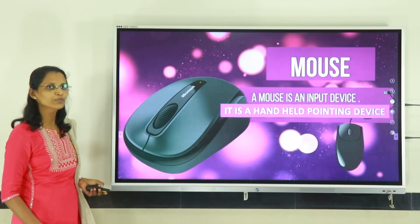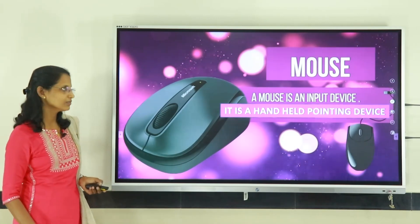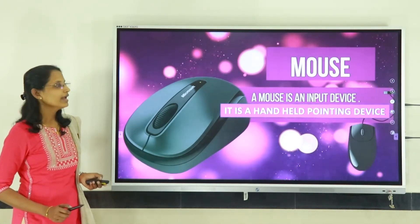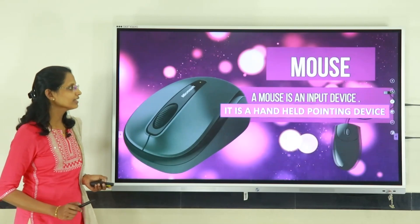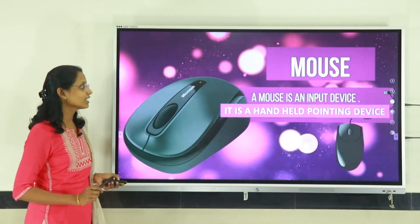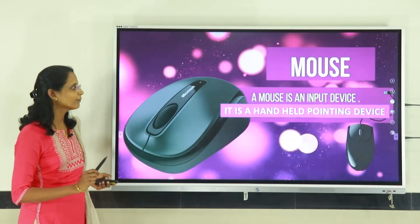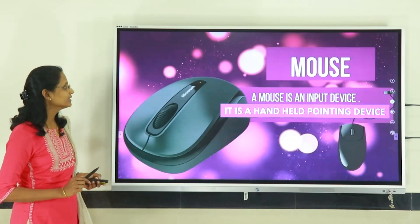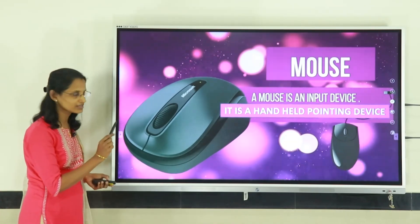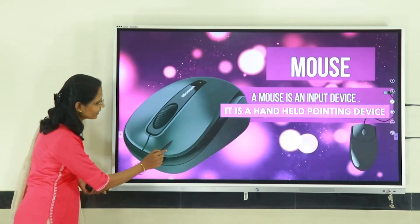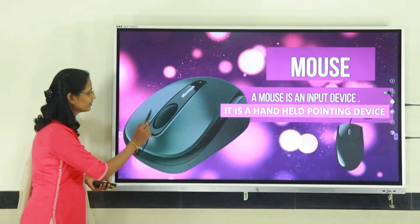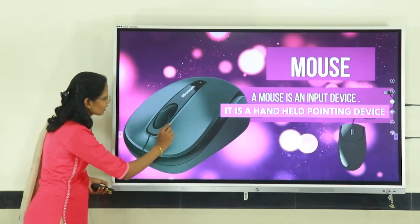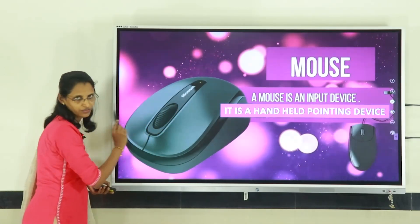The next input device is mouse. A mouse is an input device; it is a handheld pointing device. The mouse has two buttons — left button and right button. The middle wheel is called the scroll wheel.